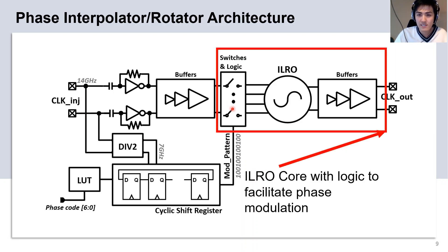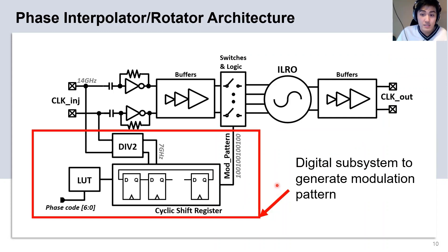The PI core itself is composed of an injection locked ring oscillator with a set of switches and logic to facilitate phase modulation. The digital subsystem generates the modulation pattern.